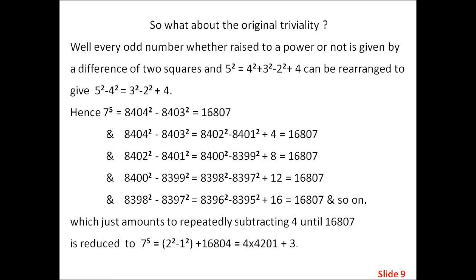And 8398 squared minus 8397 squared equals 8396 squared minus 8395 squared plus 16 equals 16807.